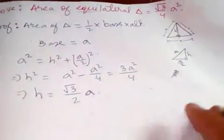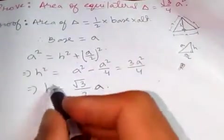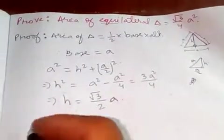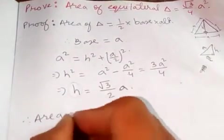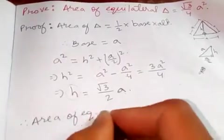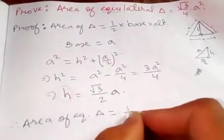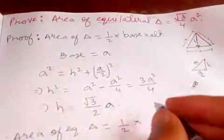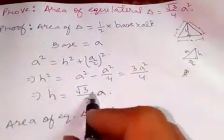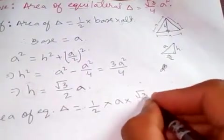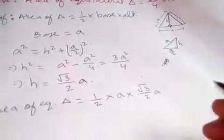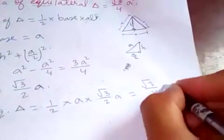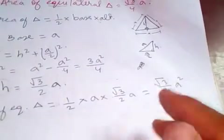Now let's put this altitude and base into the area formula. Therefore, the area of an equilateral triangle is equal to 1/2 × base 'a' × altitude √3/2 × a, which equals √3/4 × a².